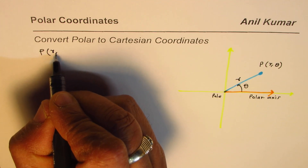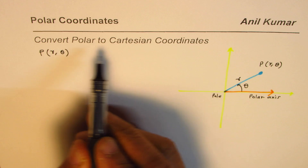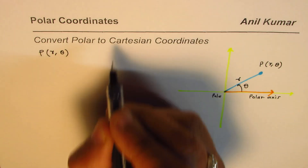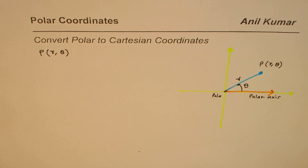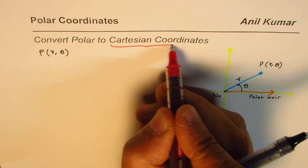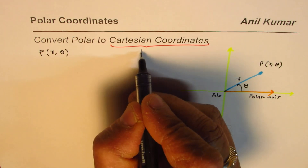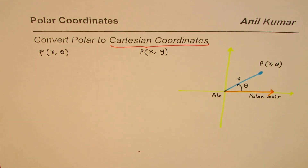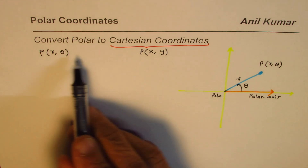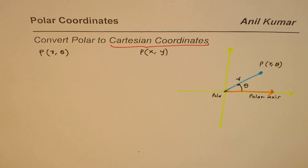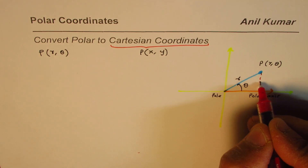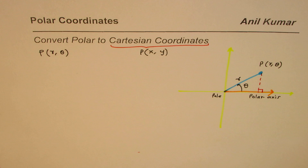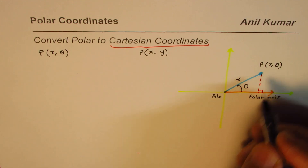We have P written as (R, theta). Now the question is to convert it to the Cartesian plane — that means we're talking about the rectangular coordinate system X and Y. So how are they related? The relation involves bringing back trigonometry: drop a perpendicular here.